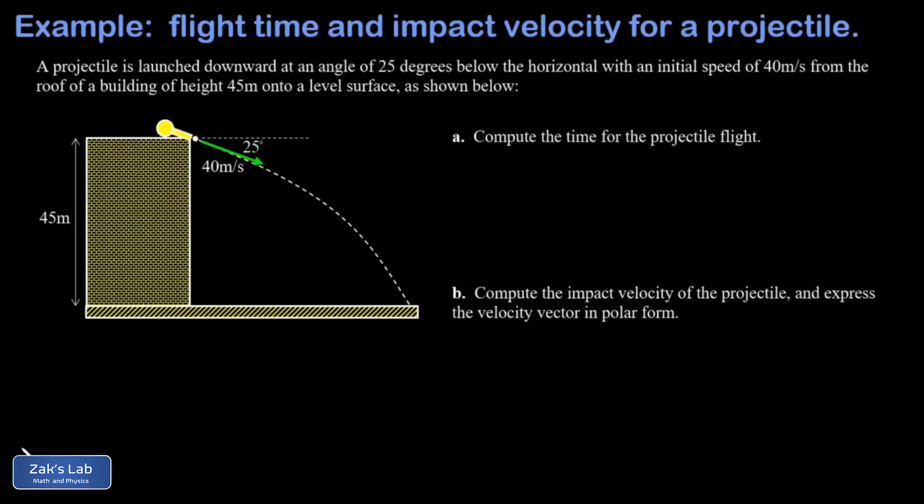In this video we're looking at a projectile launch from an initial height of 45 meters and the launch velocity actually points below the horizontal, so there's some amount of initial downward velocity.